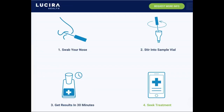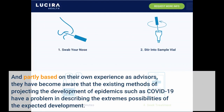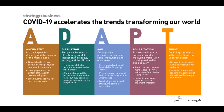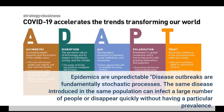Partly based on their own experience as advisors, they have become aware that the existing methods of projecting the development of epidemics such as COVID-19 have a problem in describing the extreme possibilities of the expected development. Epidemics are unpredictable — disease outbreaks are fundamentally stochastic processes. The same disease introduced in the same population can infect a large number of people or disappear quickly without having a particular prevalence.